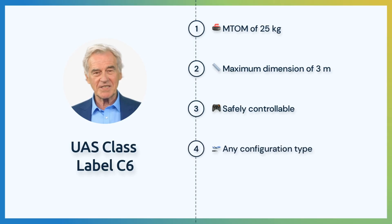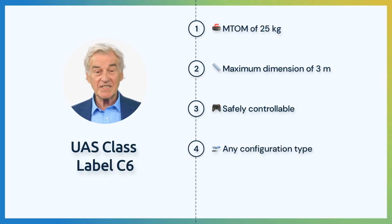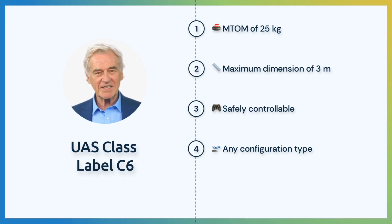Any configuration type can fall under the C-6 class label, such as multirotors, fixed wings, flying wing, lighter than air, and VTOL.